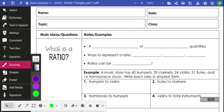Okay, so we are moving on to unit 6, and we are going to start with something called similar triangles. Similar triangles have a lot to do with ratio, so we will begin with what is a ratio? A ratio is a comparison of 2 or more quantities.